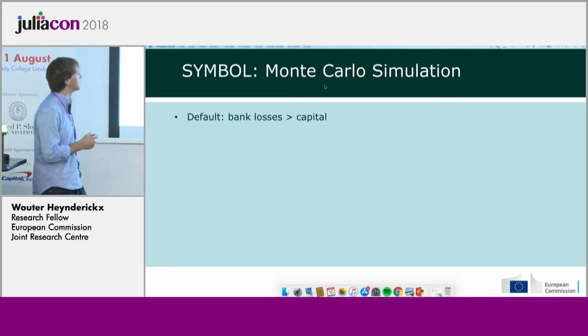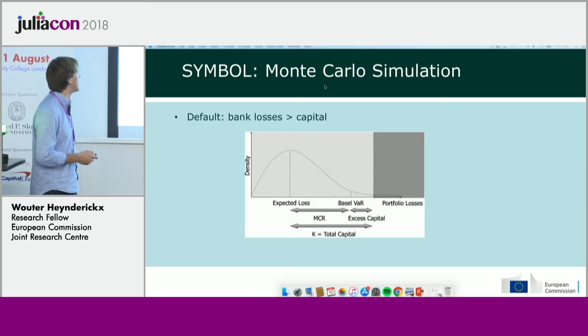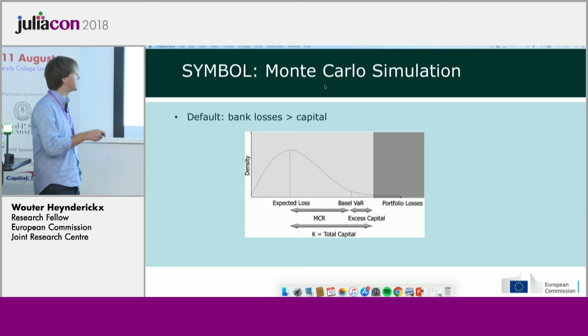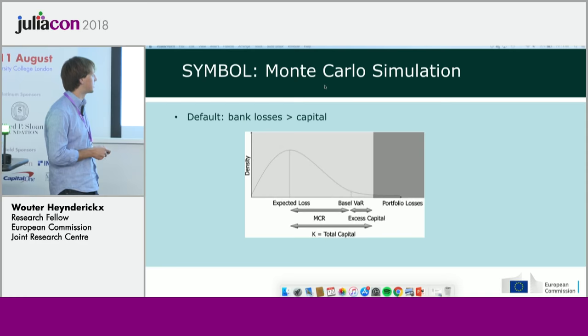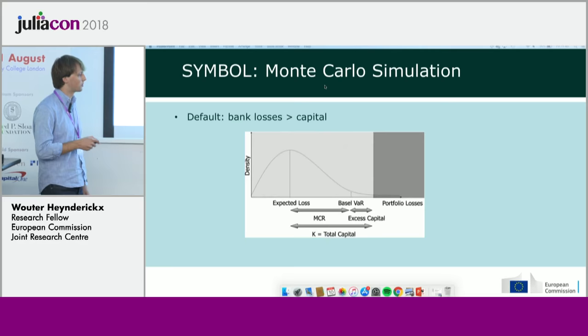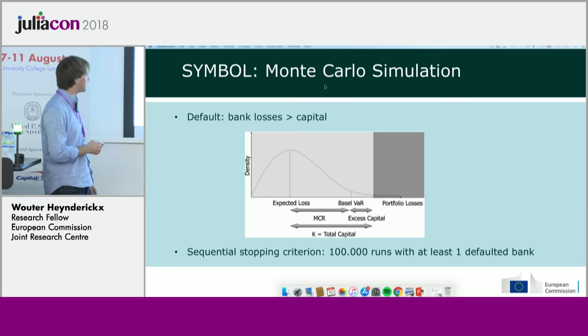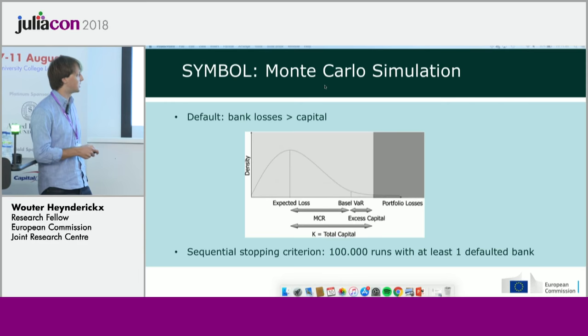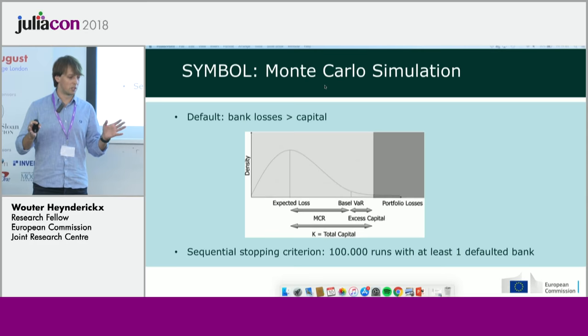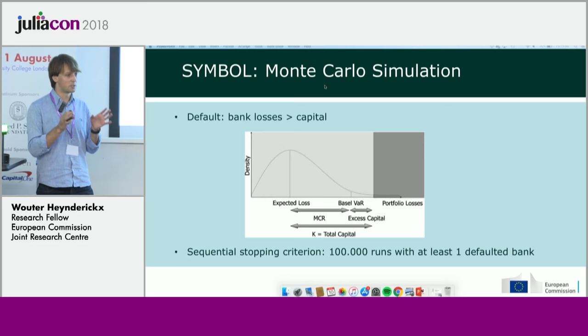Bank default occurs when a bank's losses exceed the capital available. You have a loss density function for each bank, and default happens when losses exceed the minimum capital requirement and any excess capital the bank holds. The simulation has a stopping criterion: we require 100,000 runs where at least one bank has defaulted. We specifically want to analyze what happens when a bank defaults, rather than simply running a fixed number of total simulations.